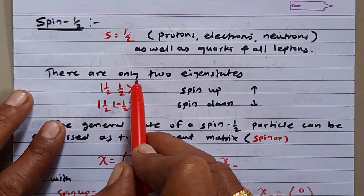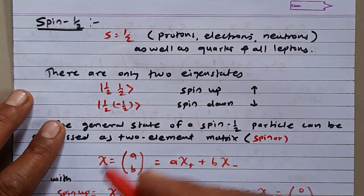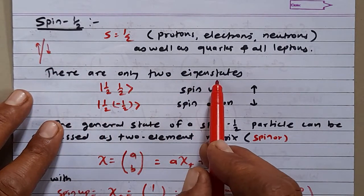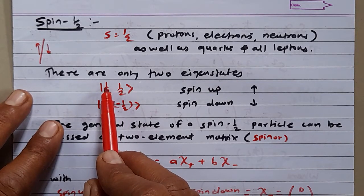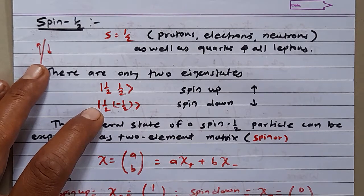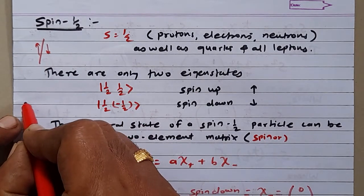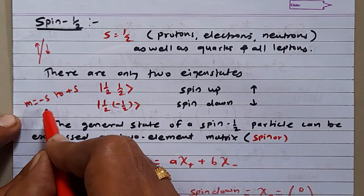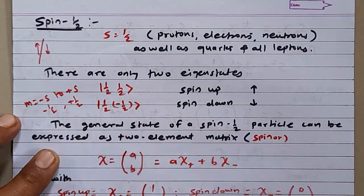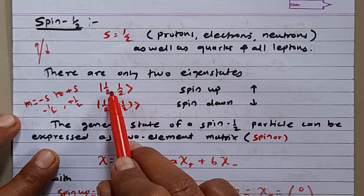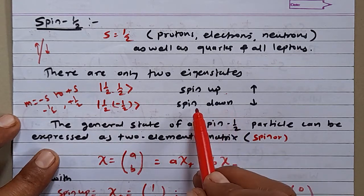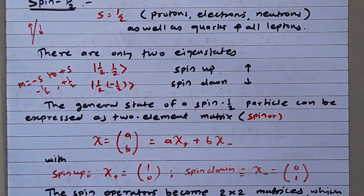There are only two eigenstates corresponding to it, because a single spin-half system can have spin-up or spin-down. So there are only two eigenstates: the S and M values. For spin-half, M takes values of plus half and minus half, since M ranges from minus S to plus S with intervals of one. The spin-up state is defined as the ket |½, ½⟩ and the spin-down ket is defined as |½, -½⟩.